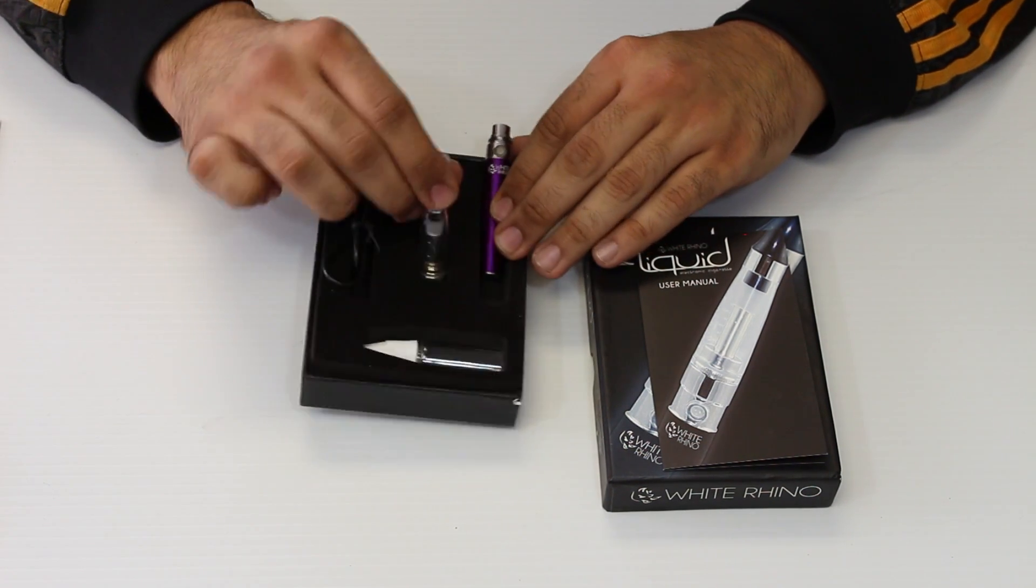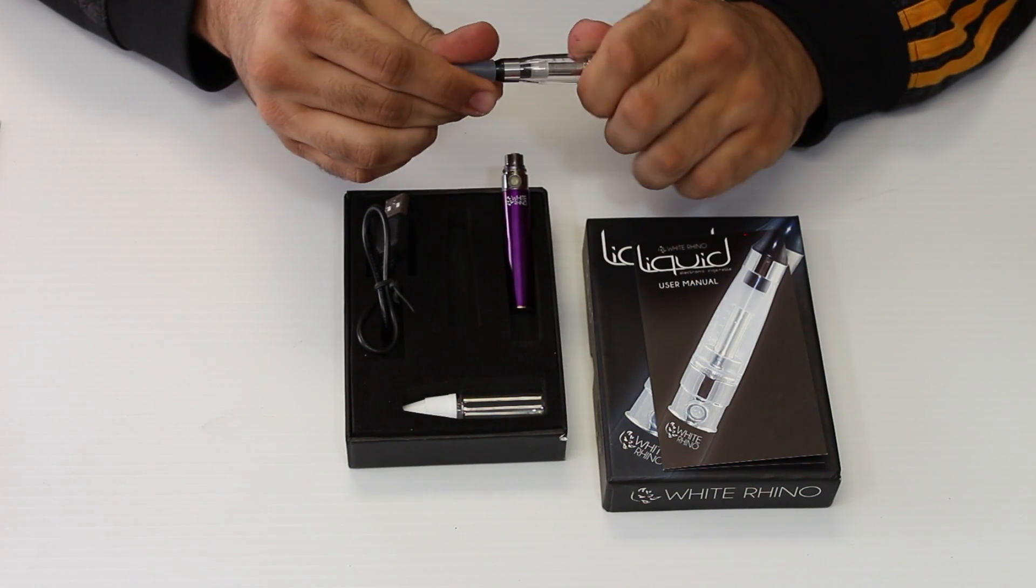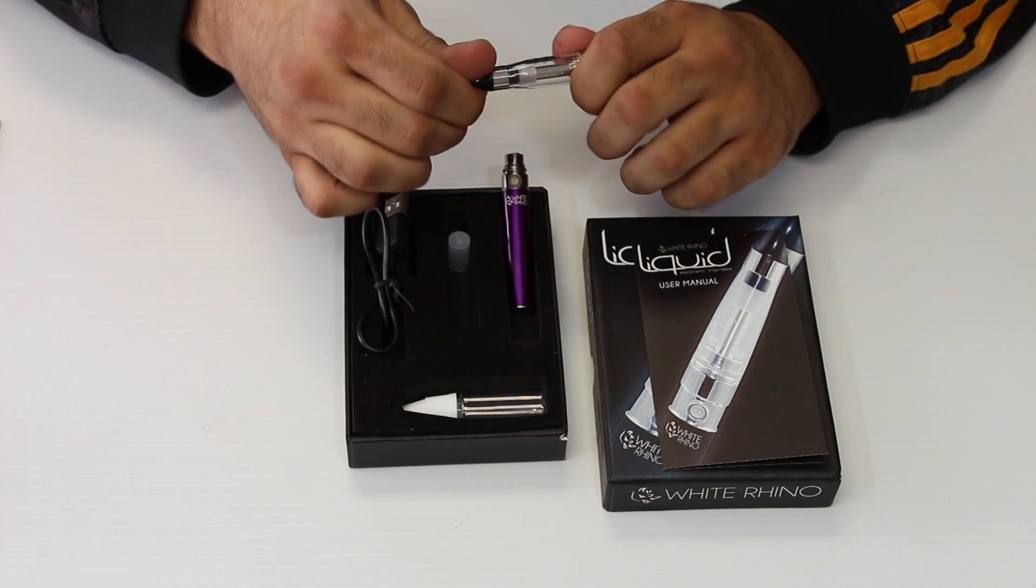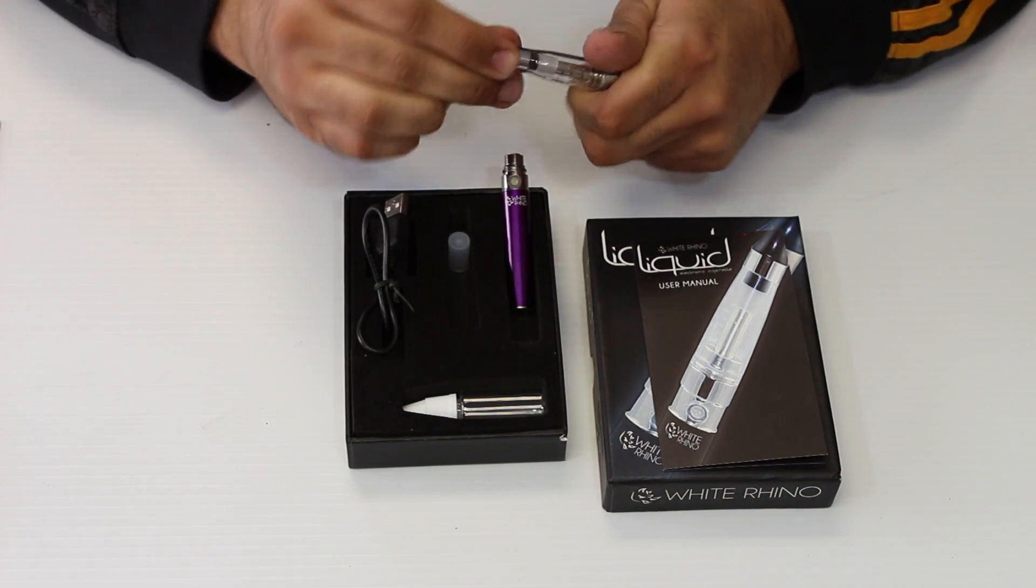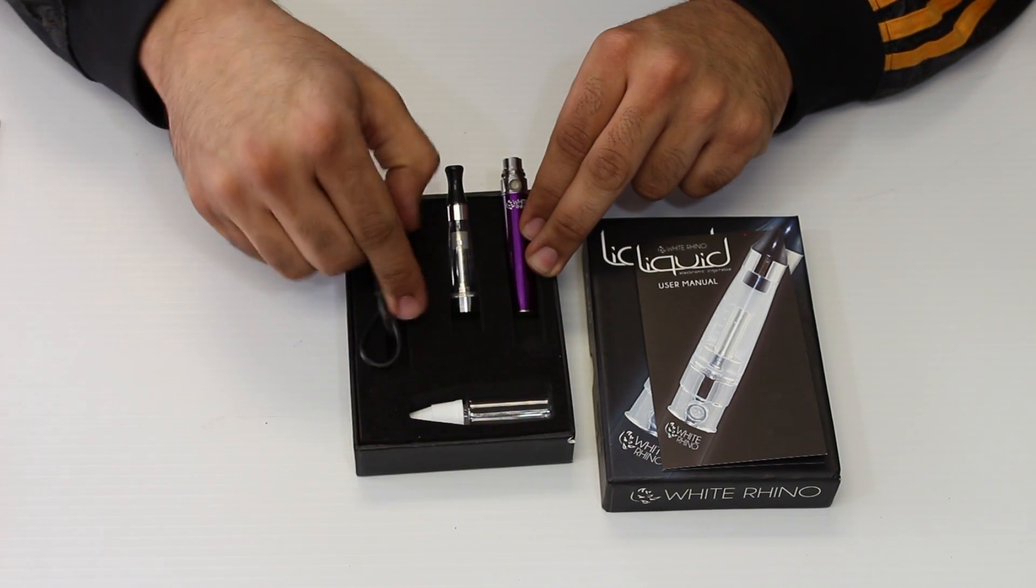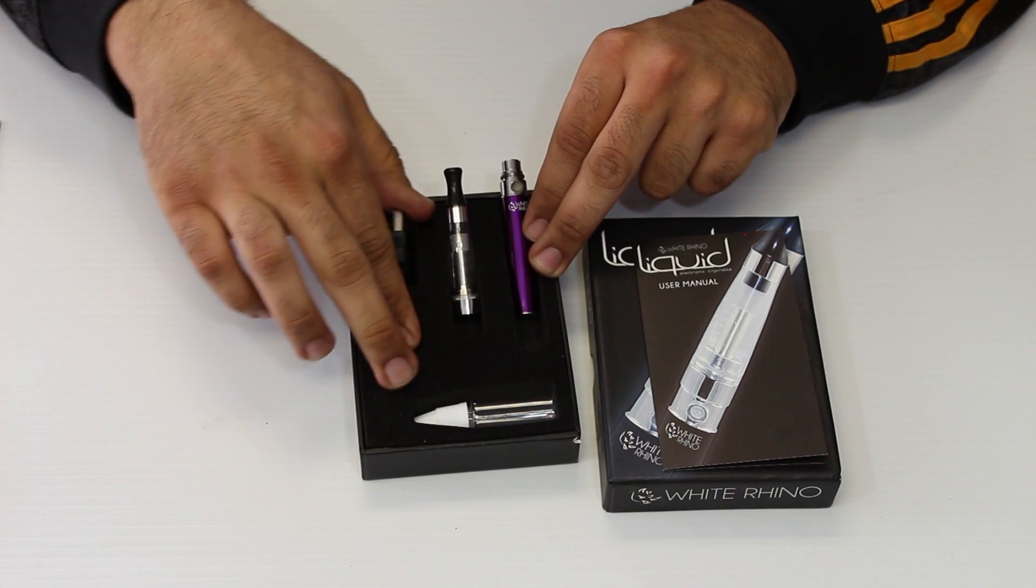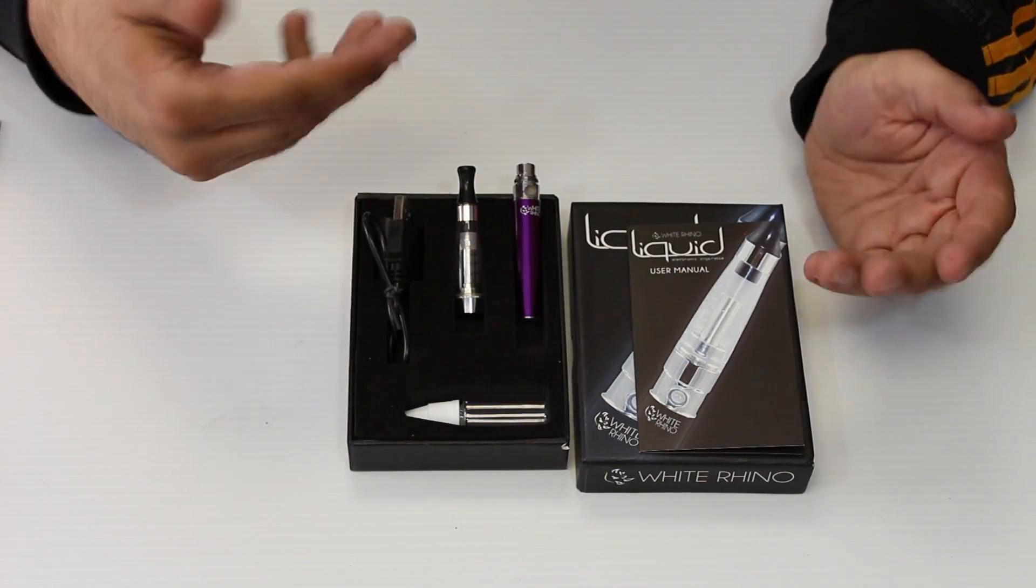It comes with a clear tank for your nicotine juice or just flavoring. It doesn't necessarily have to be nicotine juice. It comes with a mixing bottle and a USB charger. This is what this unit comes with. Let's go ahead and talk about how to put it together.